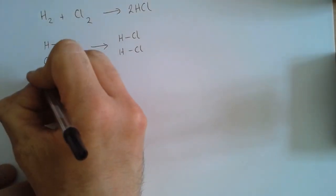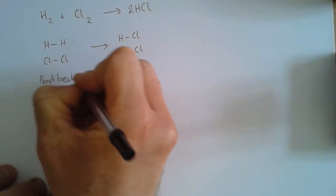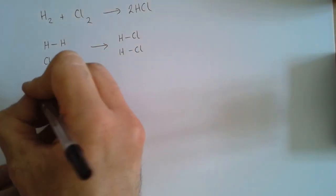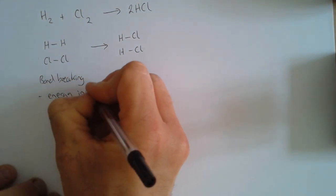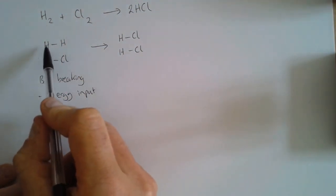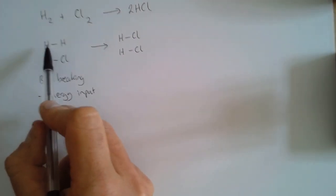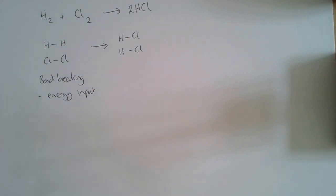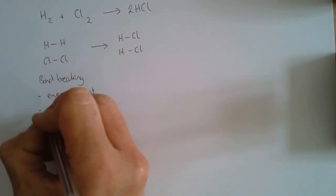So any chemical reaction involves the bond breaking step and that's going to need energy, so we're going to have an energy input in order to do that. There's an attraction, covalent bond holding these two atoms together that has to be broken in order for the reaction to take place. So we've got an energy input. In chemistry we call that the endothermic step.